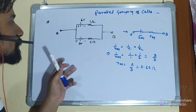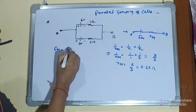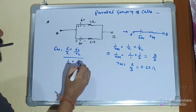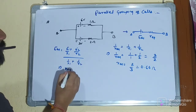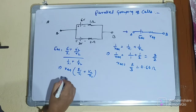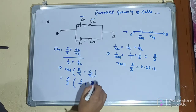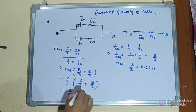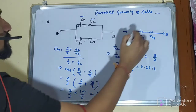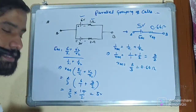Now for the equivalent EMF: E_eq = R_eq × (E1/R1 + E2/R2) = (2/3) × (6/1 + 3/2) = (2/3) × (15/2) = 5 V. So this circuit can be replaced with a simple equivalent of 5 V and 0.66 Ω internal resistance.